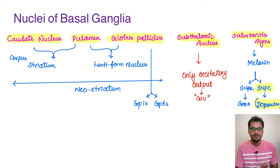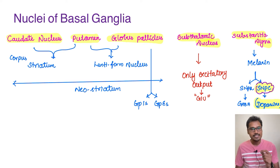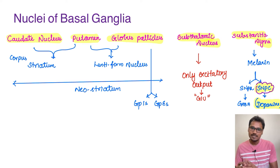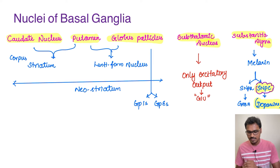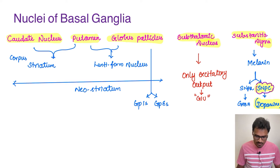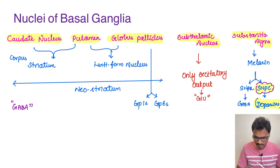The substantia nigra pars compacta sends fibers to the striatum, forming the nigrostriatal pathway. If this pathway gets affected, the person will develop Parkinson's disease. The subthalamic nucleus is the only one giving excitatory output via glutamate, and substantia nigra pars compacta gives dopaminergic output to the striatal pathway — this is the one implicated in Parkinson's disease. All other nuclei, including substantia nigra pars reticularis, are inhibitory and produce GABA.